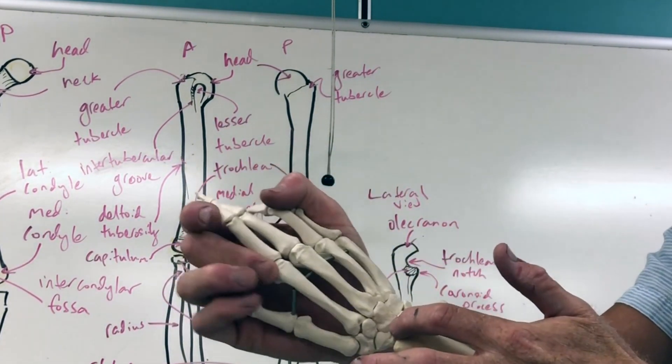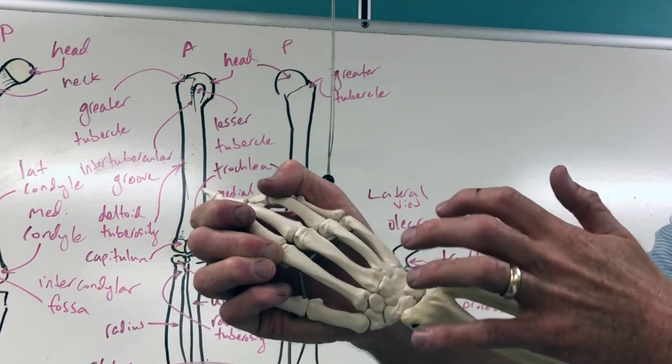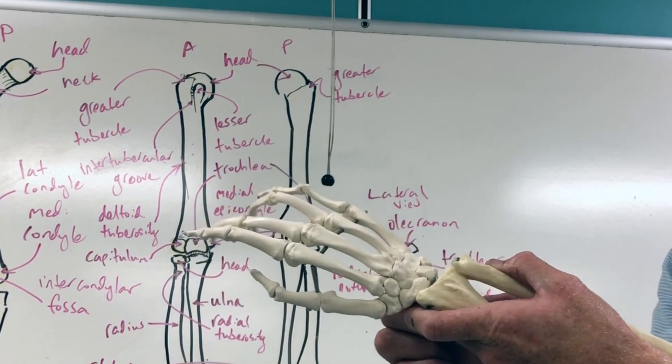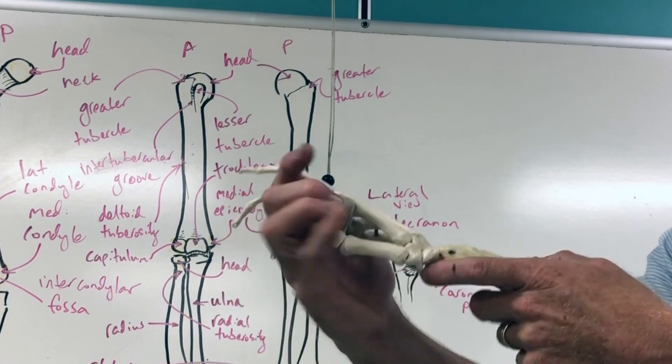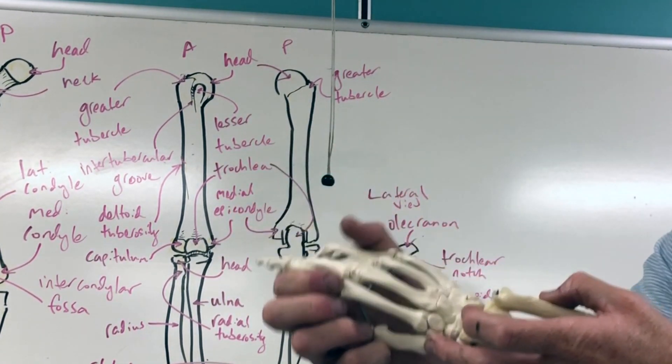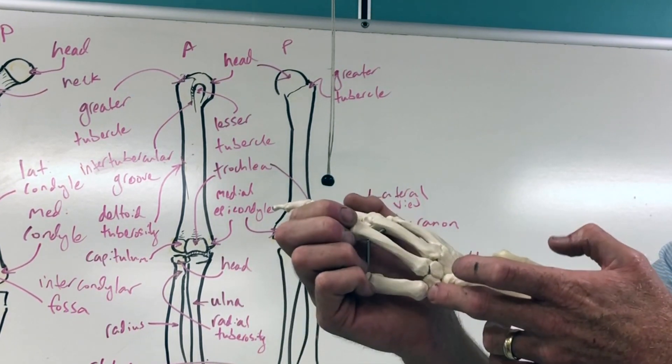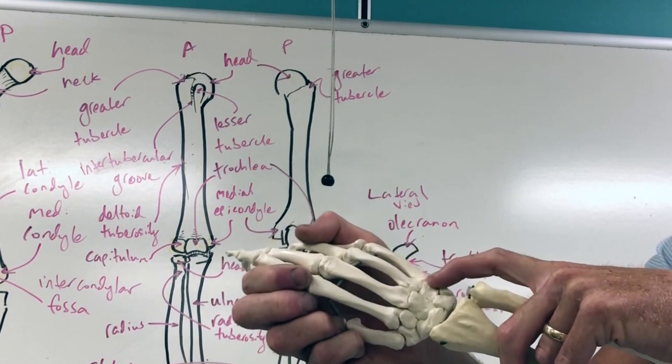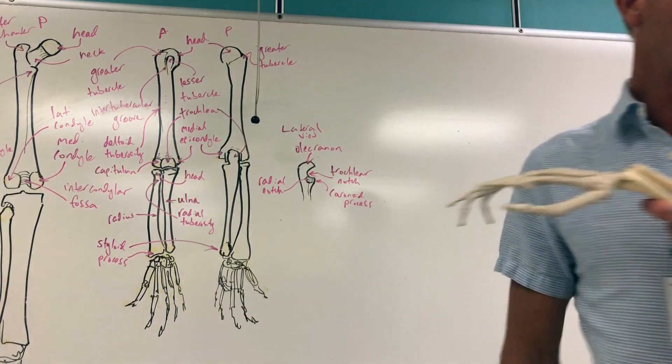Starting on the thumb side you see the scaphoid, lunate, triquetrum. Can't see the pisiform because the pisiform is more on the anterior side of that triquetrum. Then if you go over to the second row, that's where we're gonna find the trapezium, trapezoid, capitate, and then hamate.